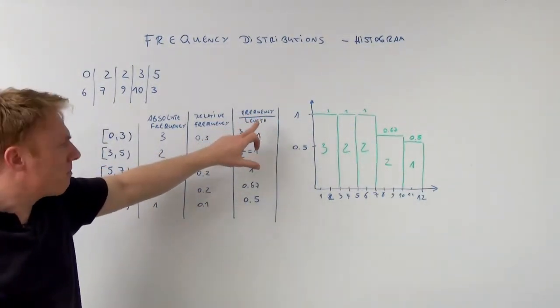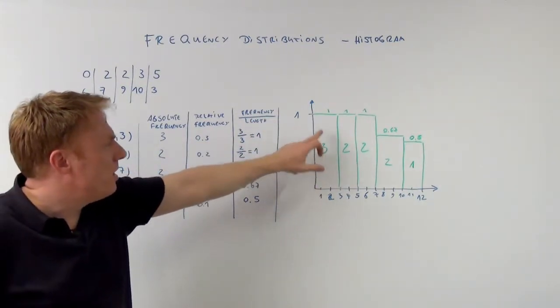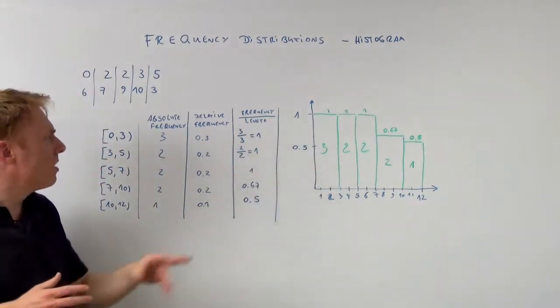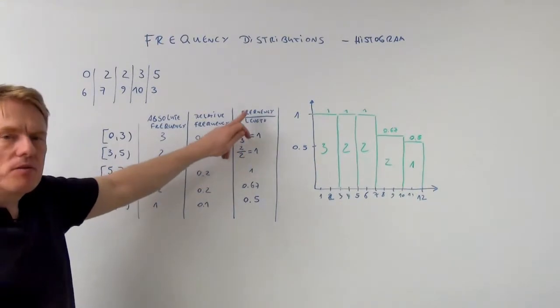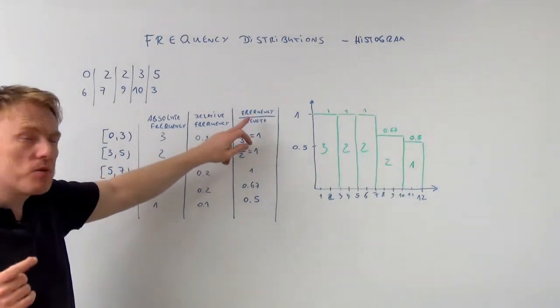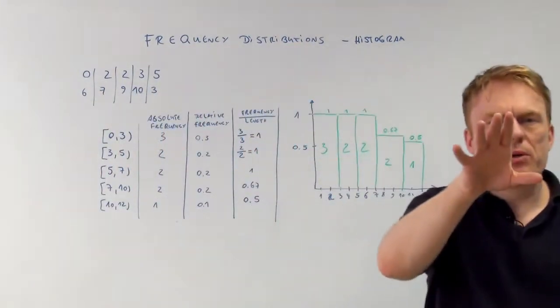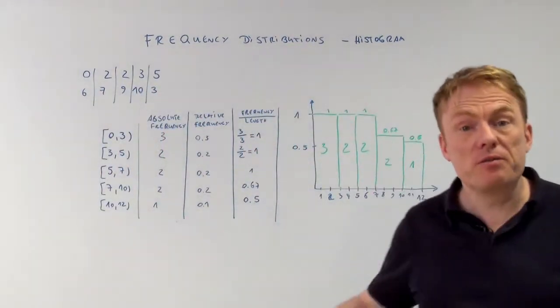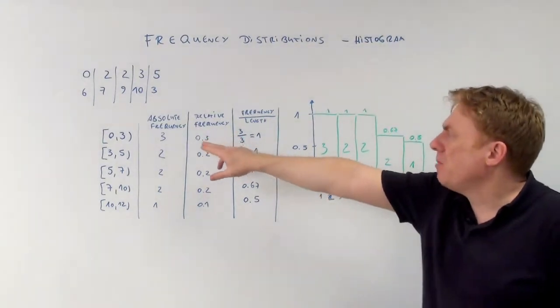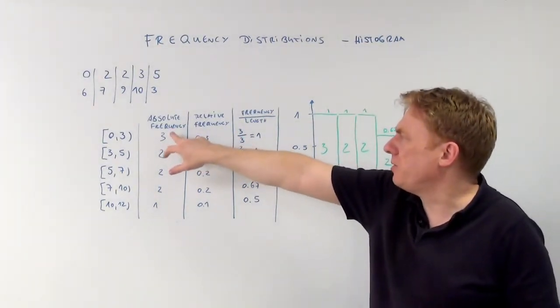For example, frequency divided by length is the thing we need to compute here. The frequency of the first class, of the first interval, is 3. If we take the absolute frequency, we could also compute the relative frequency divided by the length, but we will do it this way.